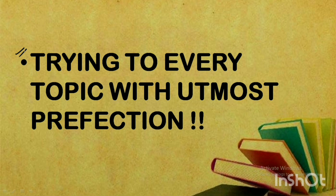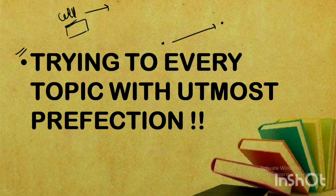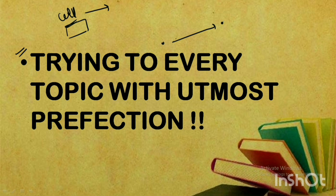The next common mistake is that we try to cover every topic with utmost perfection. For example, if you are dealing with cell cycle, most of us make the mistake of trying to cover the complete topic from first to last. That is not required — you need not be a perfectionist on every topic. You need the understanding and the points required for the examination; you do not have to write a PhD thesis on cell cycle. Avoid unnecessarily wasting time chasing utmost perfection on every topic.